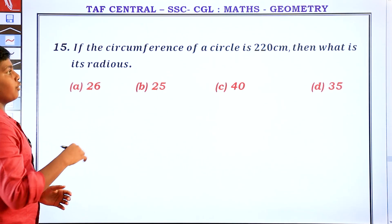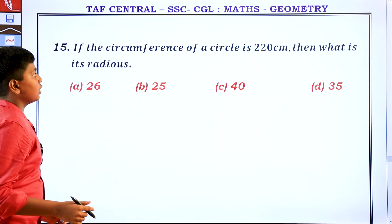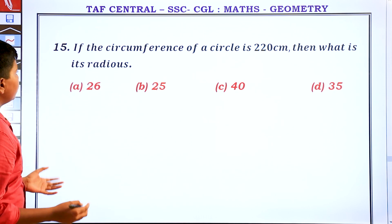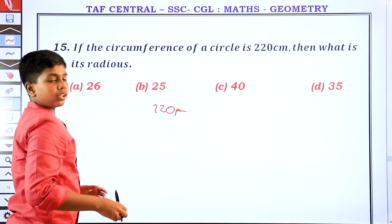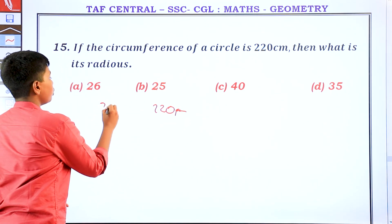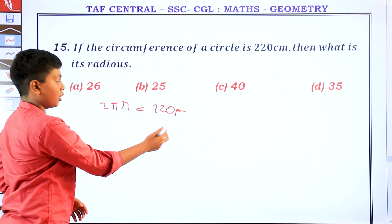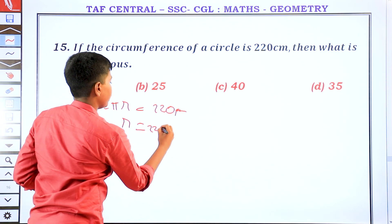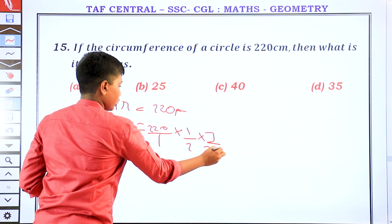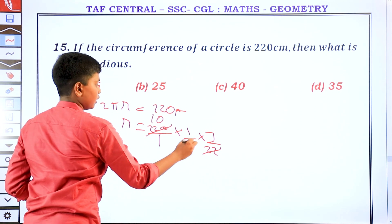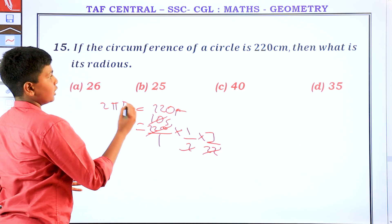If the circumference of a circle is 220 centimetres, then what is its radius? The circumference formula is 2πr equals 220. So r equals 220 by 1 into 1 by 2 into 7 by 22. Cancelling 22, this gives 220 divided by 44, so 5 into 7 equals 35. The radius is 35 centimetres.